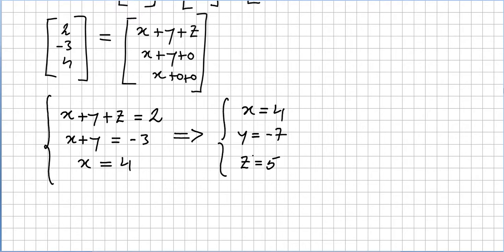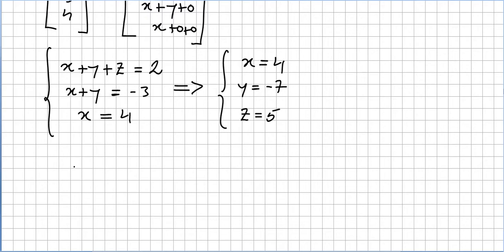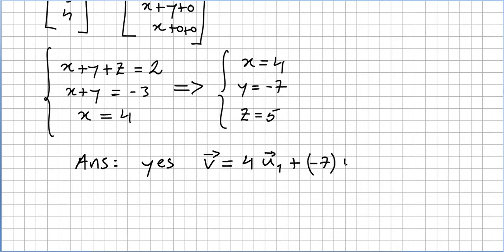Let's go back to our question: can we write vector V as a linear combination of u1, u2, u3? We got values for x, y, and z, so yes, we can. The answer is yes — vector V can be written as 4 times u1 minus 7 times u2 plus 5 times u3. So V can be written as a linear combination of these three vectors.